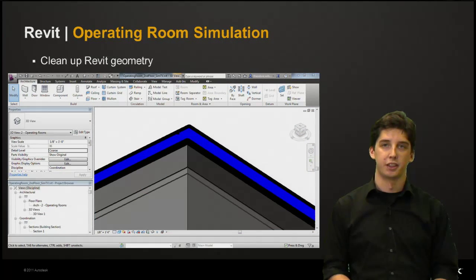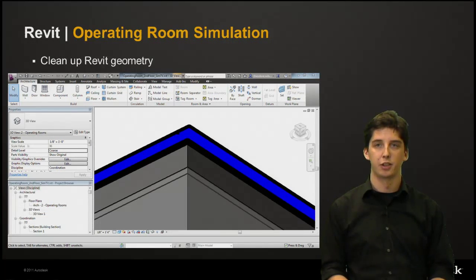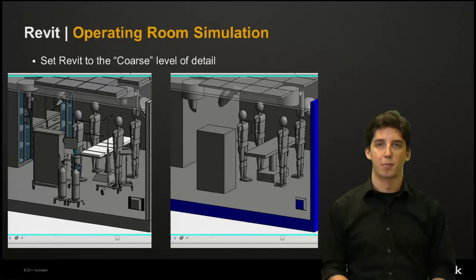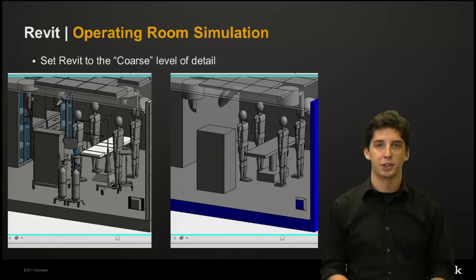We also want to clean up the Revit geometry. This means making sure all walls are joined and we have no small intersections of any objects. Just make sure that when you are creating your Revit model you snap to other objects to ensure there are no small gaps or overlaps. Here in our operating room model we can see that the walls and ceiling all line up, so we are okay. We also want to set our Revit model to the coarse level of detail. On the left image is the fine level and once we set it to coarse, like the right image, you can see a fair amount of detail disappears. This will help ensure we are using the simplest amount of detail possible.